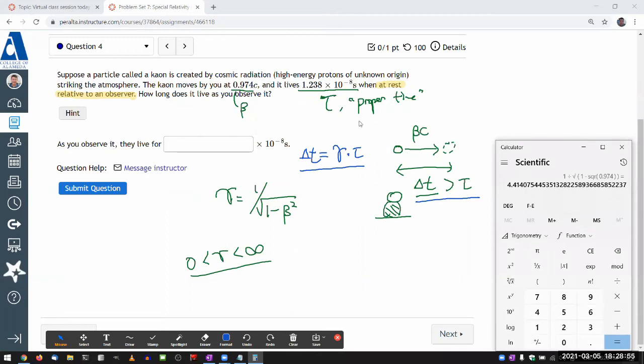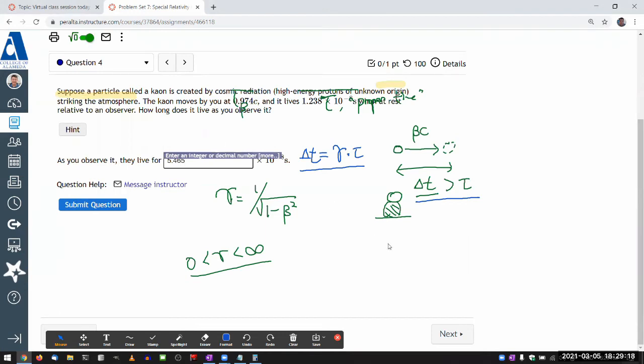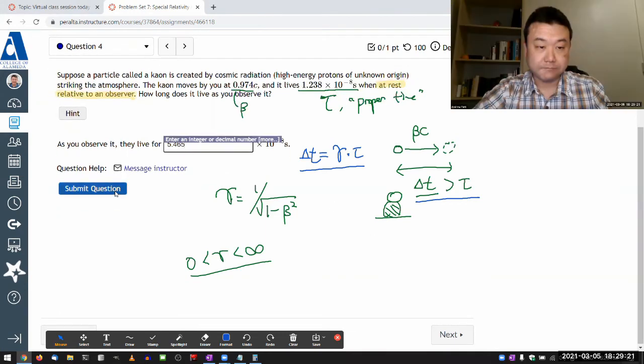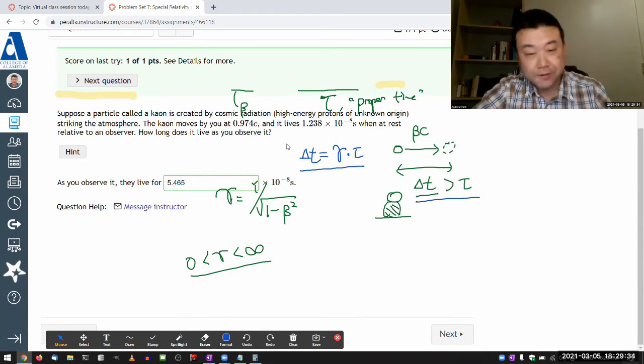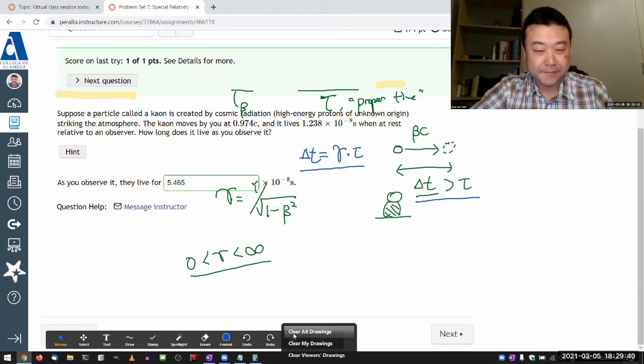Let me take this gamma factor and multiply it to the leading portion of the scientific notation because I have the same factor, 10 to the minus 8. I just need to calculate this portion. Multiply it to 1.238, that's 5.465 times 10 to the minus 8. That should be it. That's the time dilation, fairly simple. I just wanted the chance to mention that moving clocks are slow, and that phrase helps you remember which side of this expression gamma should be on.